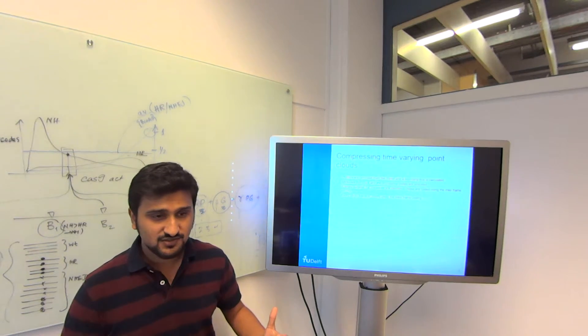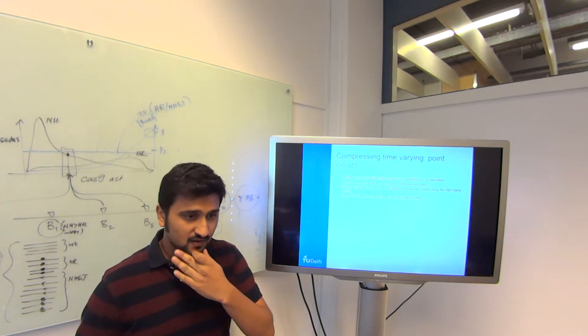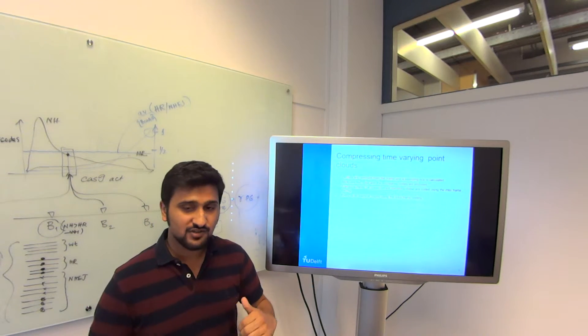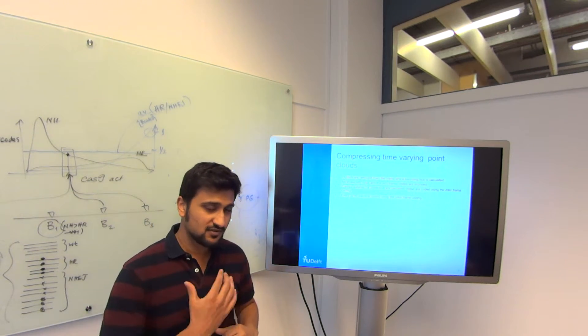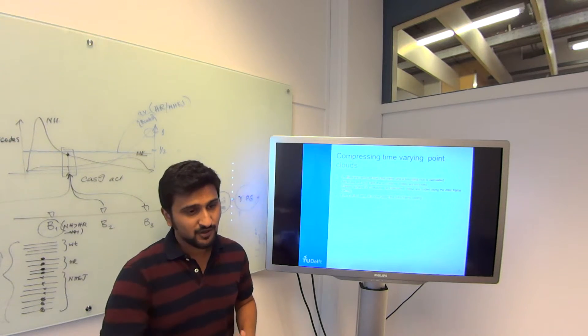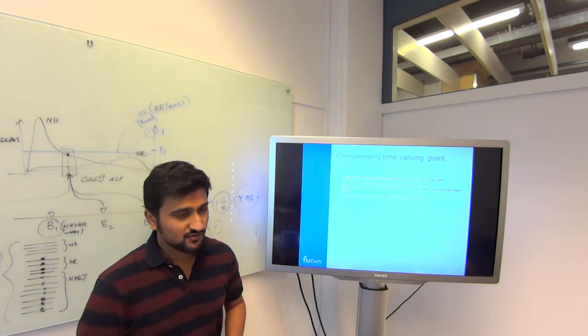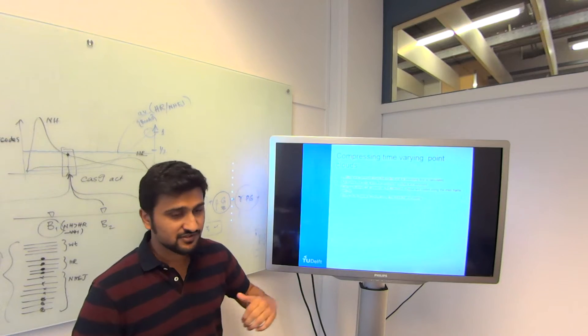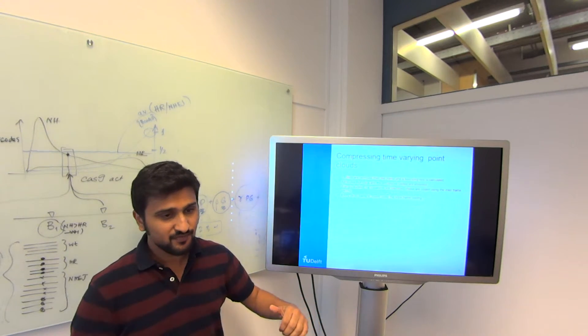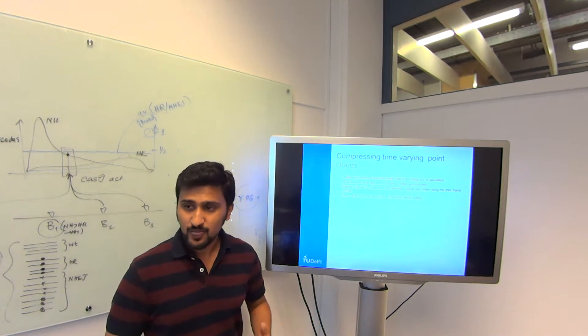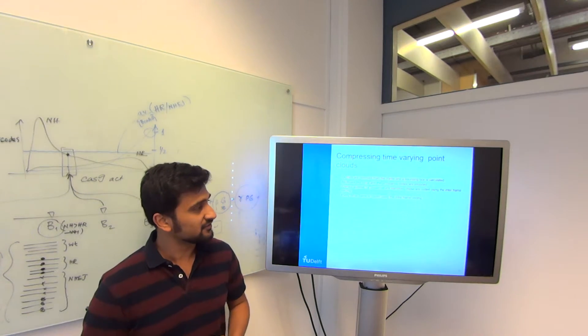One technique which they showed was where they used an XOR operation on the occupancy codes. Just the geometric part you can predict, but not the attributes like color. They just did an XOR operation on the bit stream, on the occupancy code bit stream. This doesn't work well when there's a lot of motion in the frame. And it's just for the geometry part of the information.